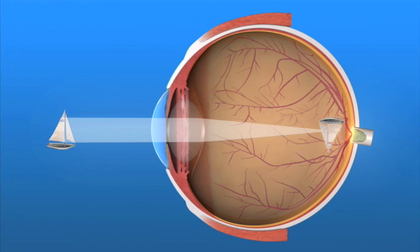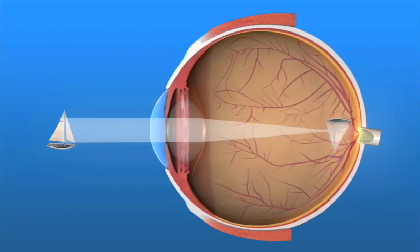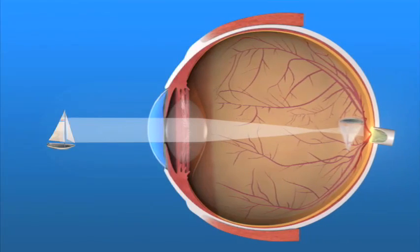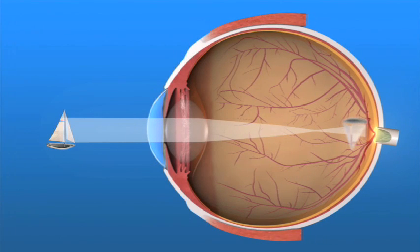Myopia, or near-sightedness. This is where the distance between the cornea and the retina is too long, so that light rays focus in front of the retina instead of on it. With myopia, close objects will look clear, but distant objects will appear blurred.